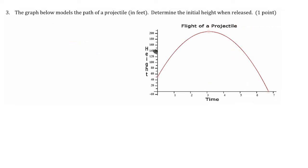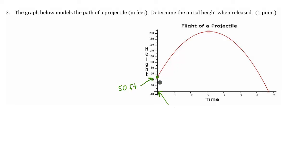Question number three is looking for initial height. We have an object going through the air again, and we want to figure out the initial height of this object. We have to figure out where time is zero — time is the horizontal axis. Our zero is right there, so all we have to do is look up on this axis to figure out the height. Our graph crosses our vertical axis at about 50, and that is in feet. So the starting point of our object before it flies through the air is going to be at 50 feet, and that is at zero seconds.